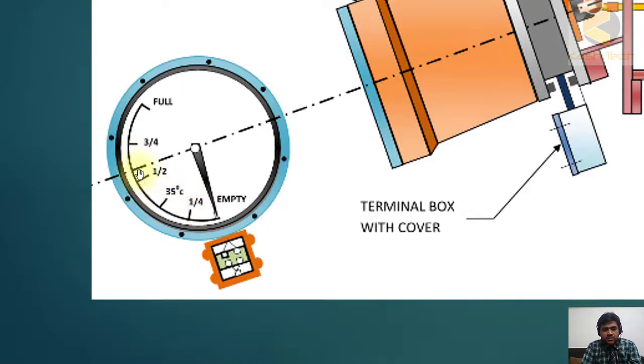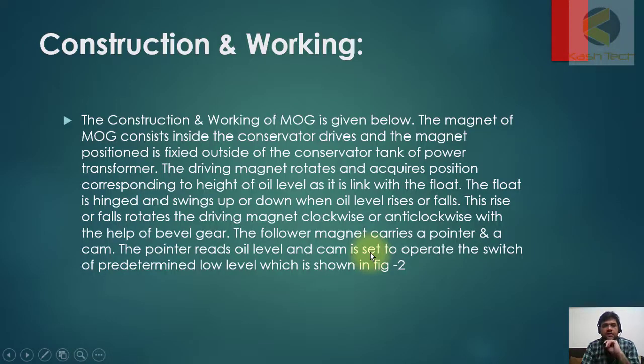Construction and working of MOG is given below. The magnet of the MOG consists inside the conservator drive, and the magnet position is fixed outside of the conservator tank of power transformer. The driving magnet rotates and acquires position corresponding to height of oil level as it is linked with the float. The float is hinged and swings up or down when oil level rises or falls.